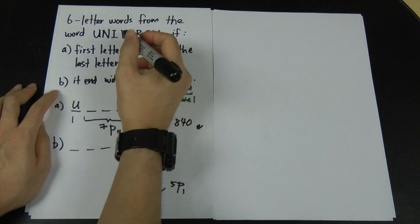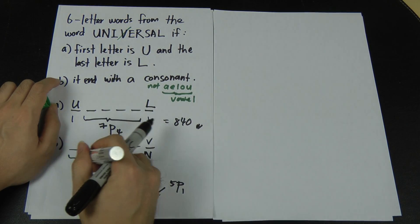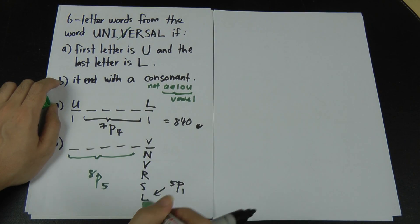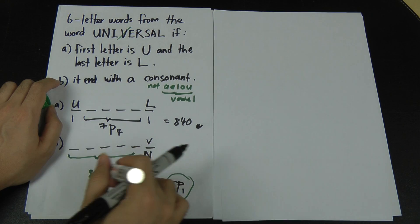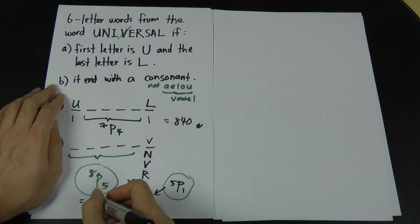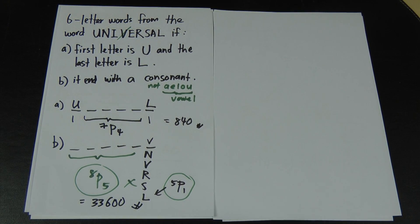After choosing one consonant for the last place, we have 5 remaining positions and 8 remaining letters to arrange freely. So we calculate 8P5 for the first five positions, multiplied by 5P1 for the last position. Using a calculator, 8P5 × 5P1 = 6720 × 5 = 33,600 ways. That's the final answer for Part B. I hope this tutorial helps you understand these permutation questions — thanks for watching!